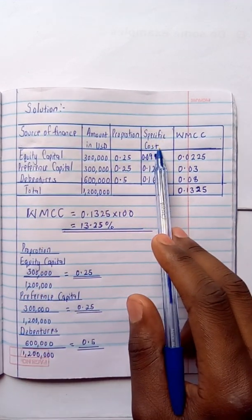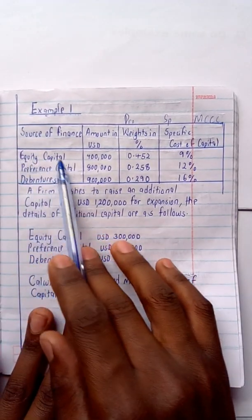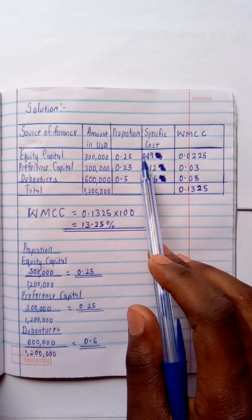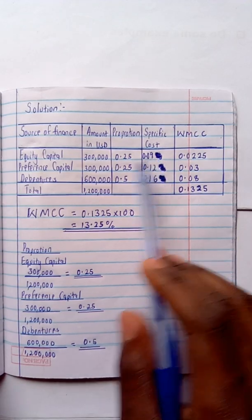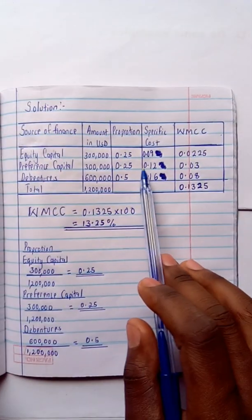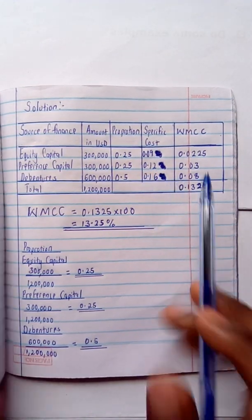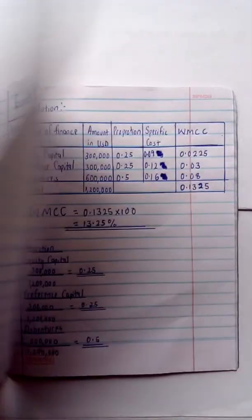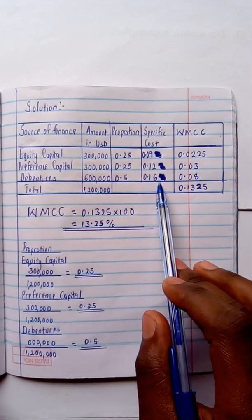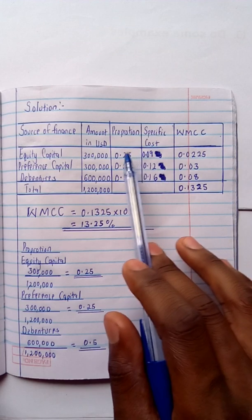The specific cost of capital comes from the question: equity capital was 9%, which divided by 100 gives 0.09. Preference capital is 12%, giving 0.12 when divided by 100. Debentures are 16%, giving 0.16 when divided by 100.